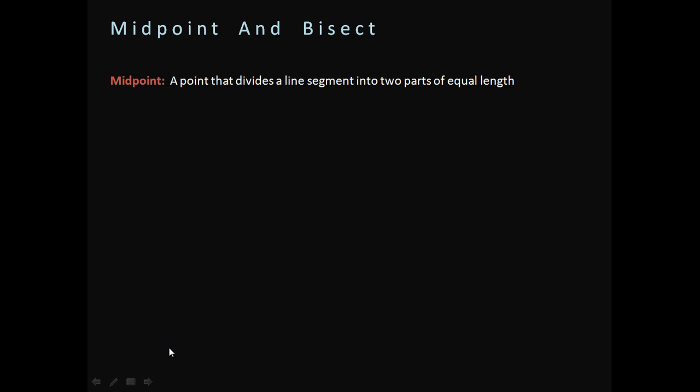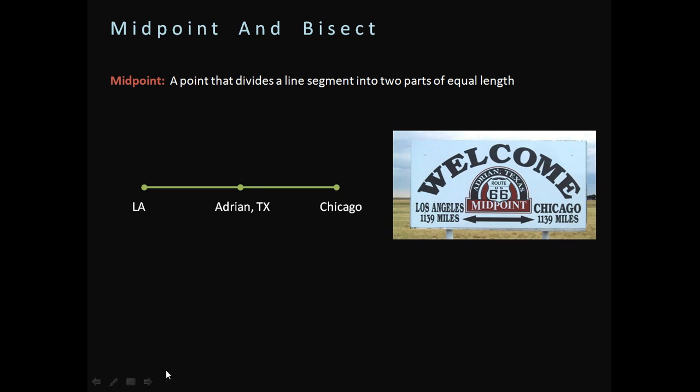So what does that mean? Let's take a look at an example here. In this sign, we see that it says Welcome to Adrian, Texas. And what Adrian, Texas is, is it's a special place because it's right in the middle of this road that's called Route 66, or U.S. Highway 66. Route 66 is a famous road that goes from Los Angeles to Chicago. And Adrian,